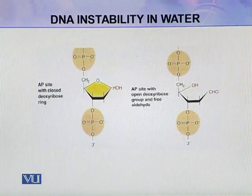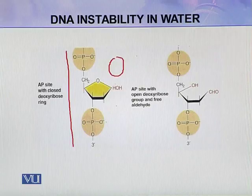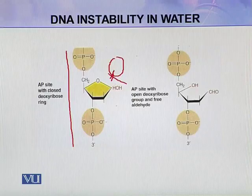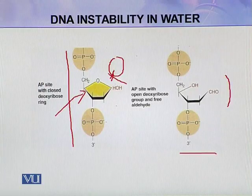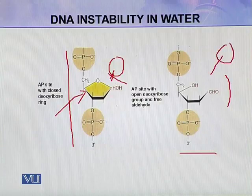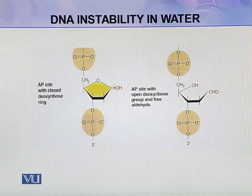Two examples of AP sites can be seen here. In the normal strand, a nitrogenous base is attached to the deoxyribose sugar through N-glycosyl linkage. When this linkage is broken, an AP site is produced. The first type has a closed deoxyribose ring. In the second type, the deoxyribose ring is open and a free aldehyde group is present, which is very dangerous for the DNA molecule.